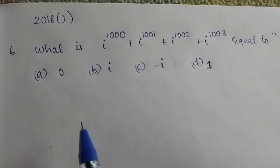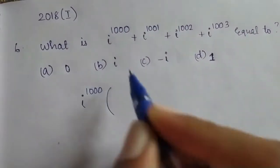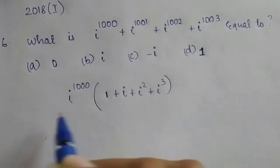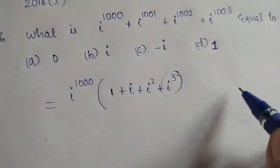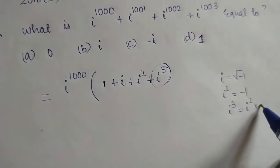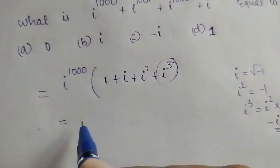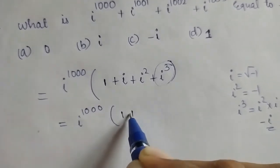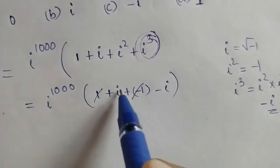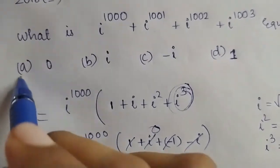Next question from 2018: find the sum. i raised to 1000 is 1. Computing 1 plus i plus i squared plus i cubed using standard values: i equals root of minus 1, i squared equals minus 1, i cubed equals minus i. Substituting: 1 plus i plus minus 1 plus minus i. The 1 and minus 1 cancel, and i and minus i cancel. So the sum equals 0. Option giving 0 is the correct answer.